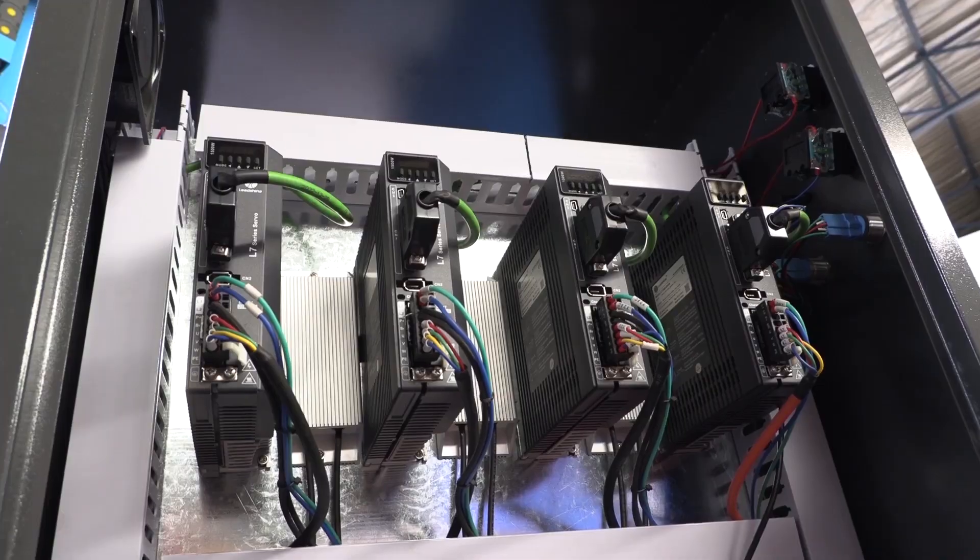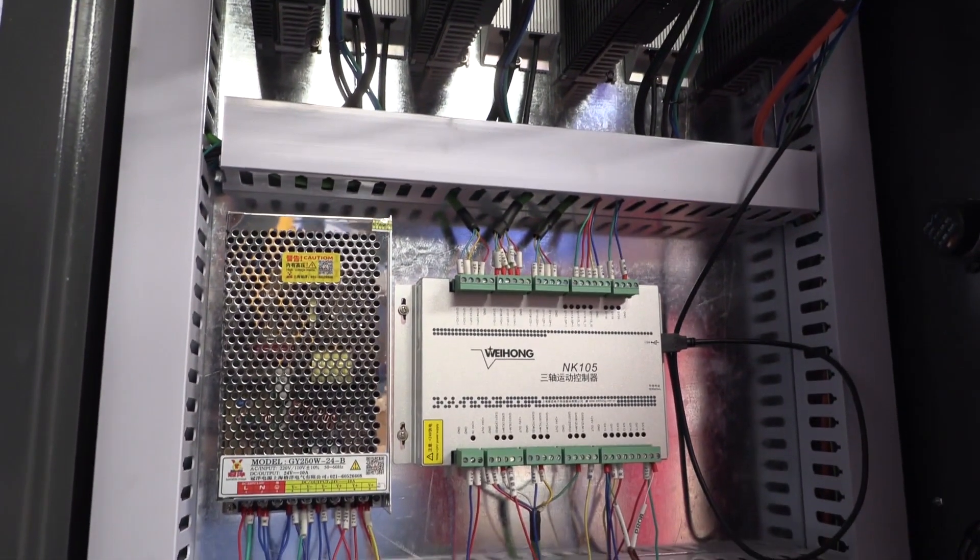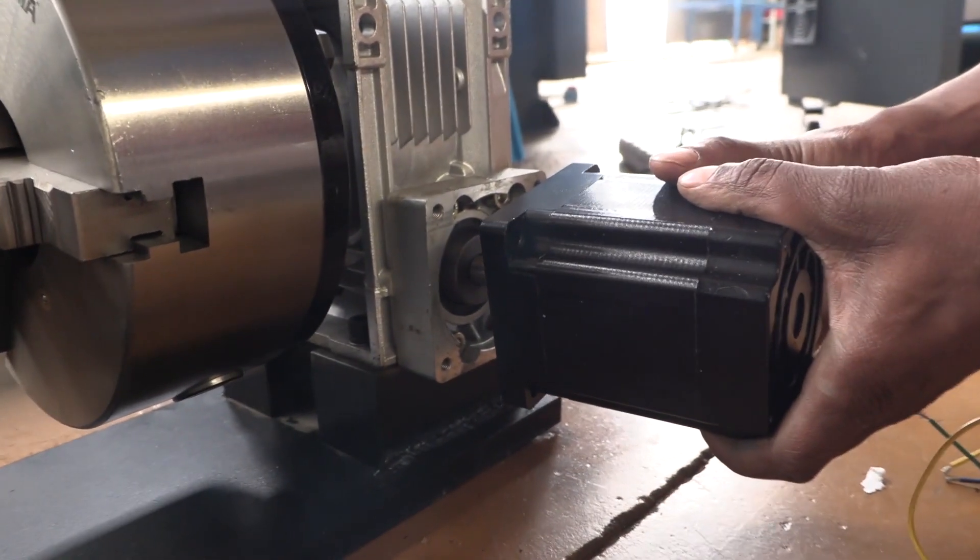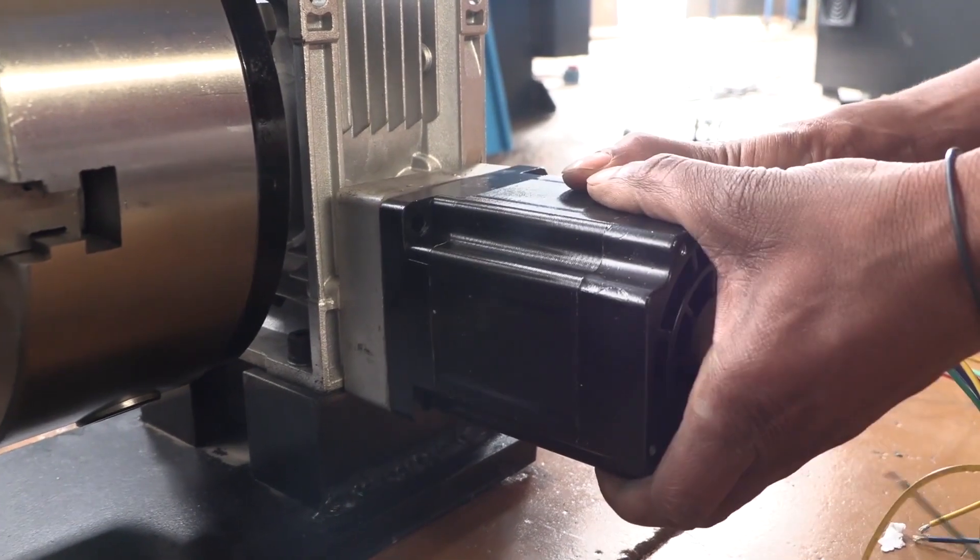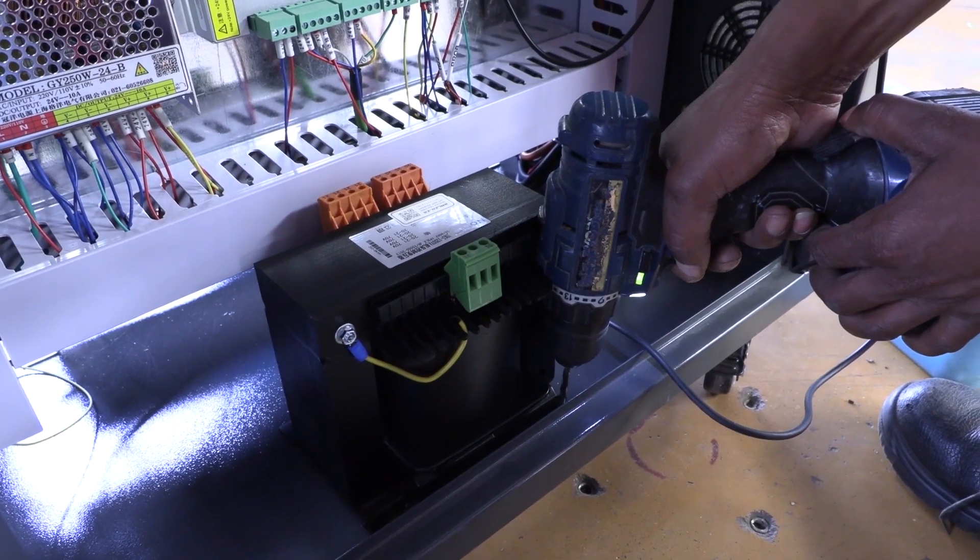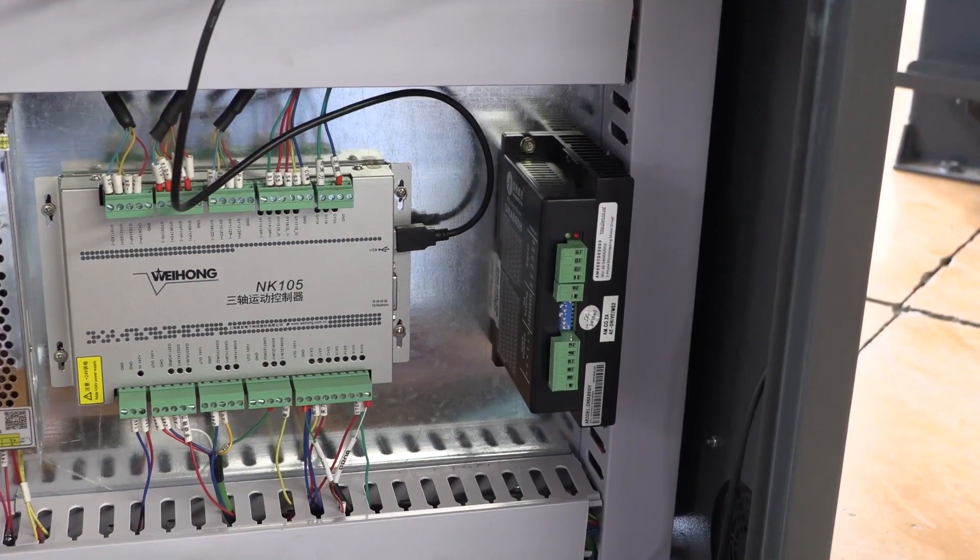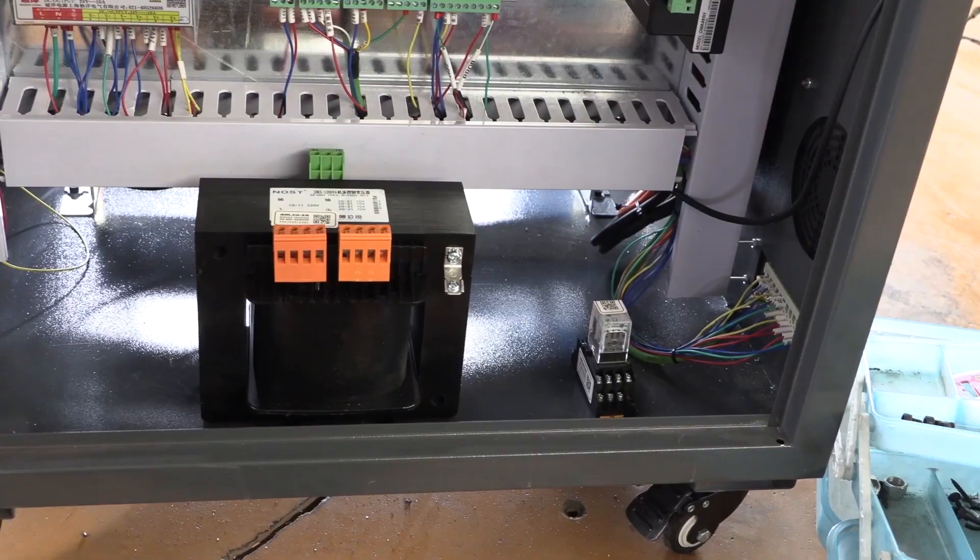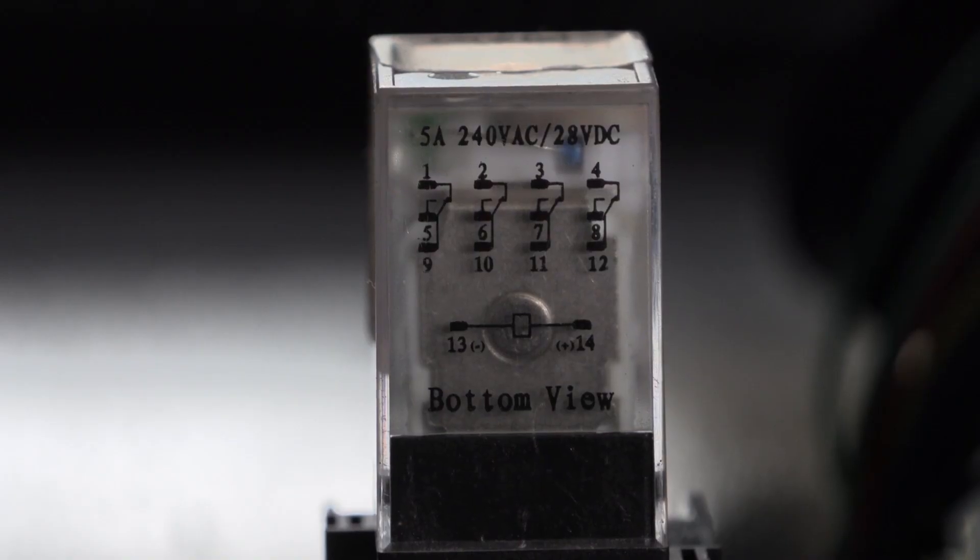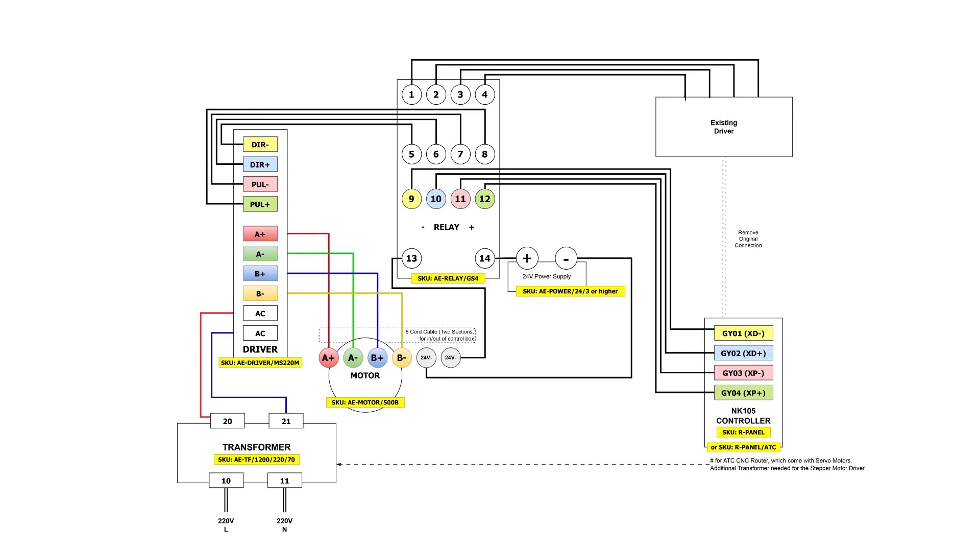for this video we're going to take you through the installation anyway. Start by fixing the motor onto the gearbox, and then fix the transformer, driver, and relay into the control cabinet. Now for the wiring, the best way